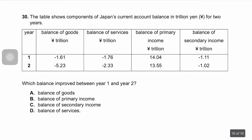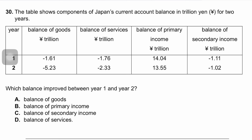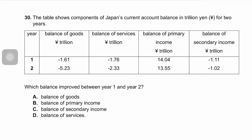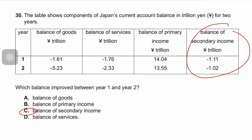Question thirty: the table shows components of Japan's current account balance for two years. The balance of goods and services worsened. The balance of primary income surplus fell from 14.04 to 13.55. The balance of secondary income improved — the deficit fell from 1.11 to 1.02, showing an improvement. Therefore, the balance that improved between year one and year two is the balance on secondary income. The correct answer is C. I'll end the video here and wish you all the very best for your results in August.